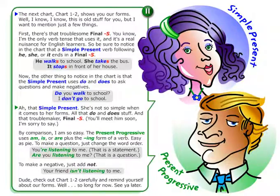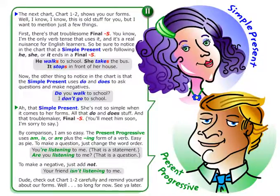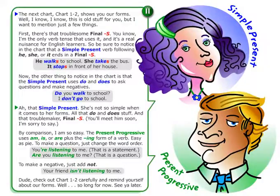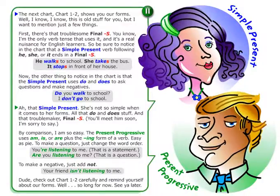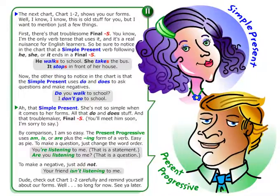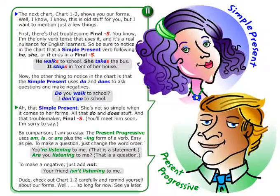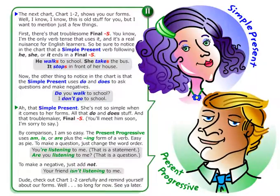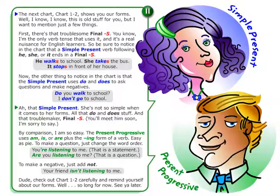Now, the other thing to notice in the chart is that the simple present uses do and does to ask questions and make negatives. Do you walk to school? I don't go to school. That simple present — she's not so simple when it comes to her forms. All that do and does stuff, and that troublemaker, final S.